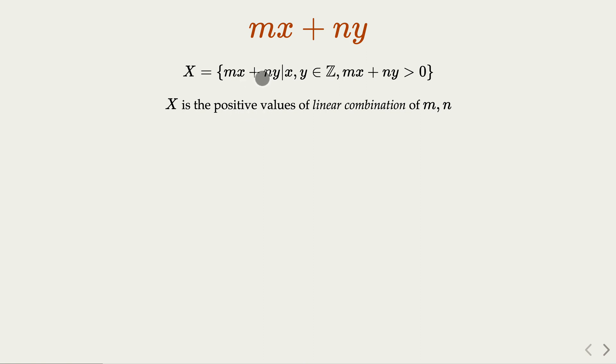So the linear combination x and y could be negative, so this value could be negative, but we ignore that. We take the positive values and we call the set X. Now, we claim that X is non-empty.